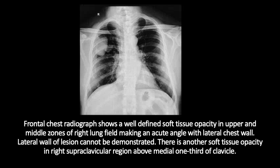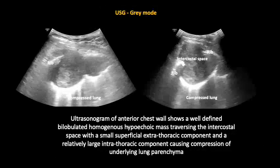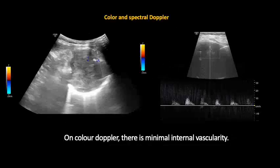An ultrasound was performed as the swelling was superficial. The ultrasonogram shows a well-defined bilobulated, homogenous, hypoechoic mass traversing the intercostal space, with a small superficial extra-thoracic component and a relatively large intrathoracic component causing compression of the underlying lung parenchyma. Color Doppler and spectral Doppler showed minimal internal vascularity.